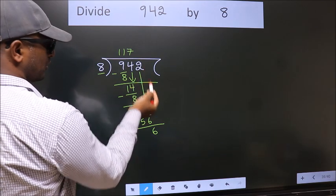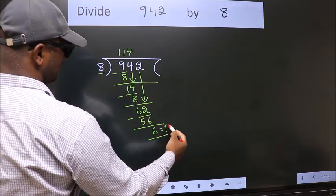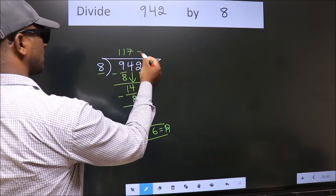No more numbers to bring it down. So we stop here. This is our remainder. This is our quotient.